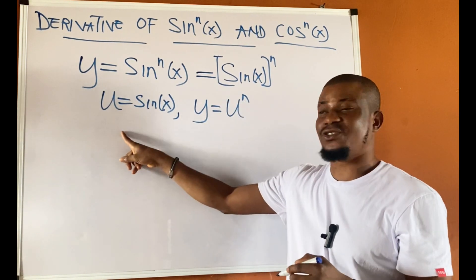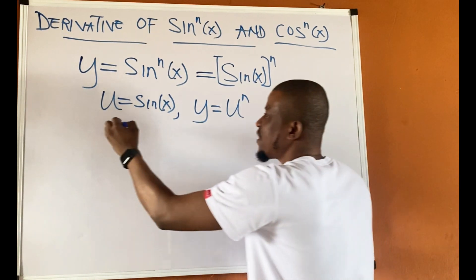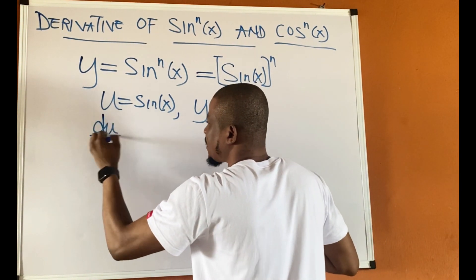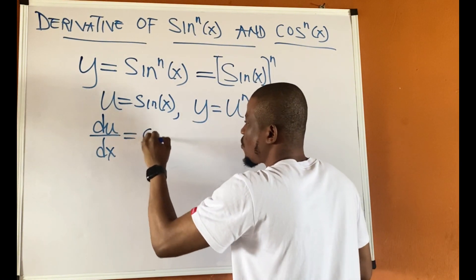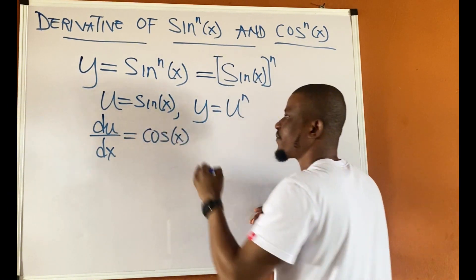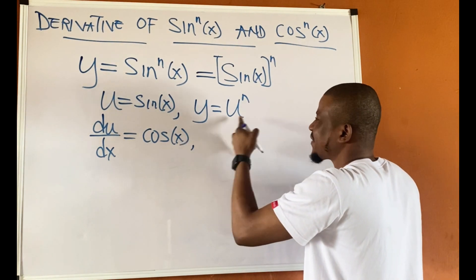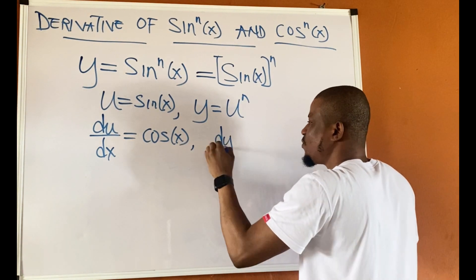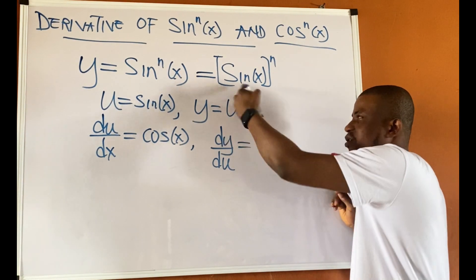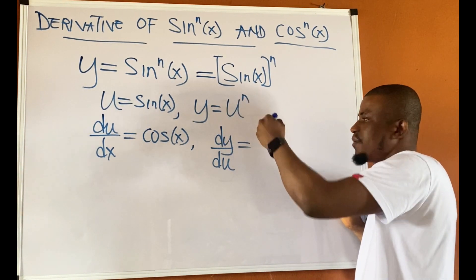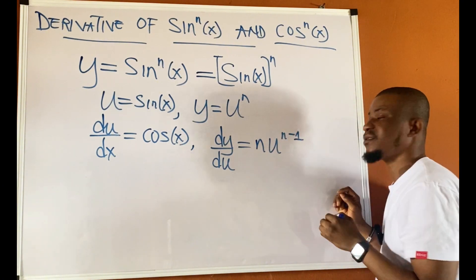The next part is just to differentiate u and also differentiate y. If we differentiate u with respect to x, we would have cos x. Then differentiate y with respect to u — dy/du would be n·u^(n−1).